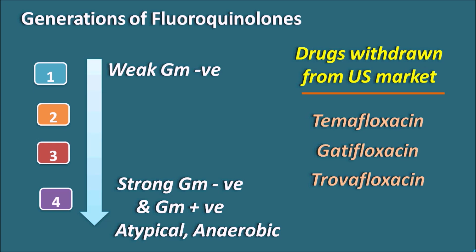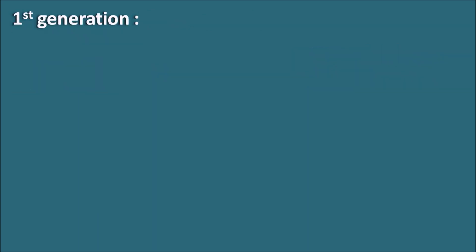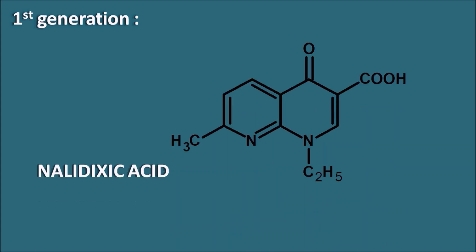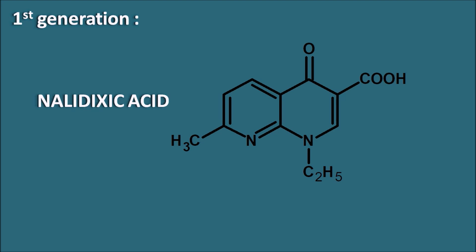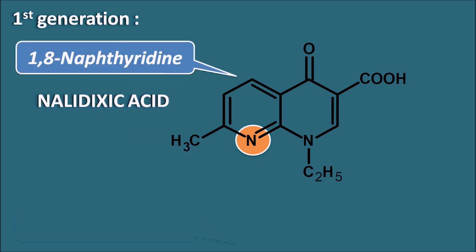Let us discuss one by one the drugs in different generations, starting with the first generation. One first generation fluoroquinolone is nalidixic acid. However, if we observe its structure, it has a nitrogen instead of carbon at one position, meaning it does not have a quinoline ring — instead it has a 1,8-naphthyridine ring system. So nalidixic acid is not technically a fluoroquinolone, but it is classified as first generation because it has structural similarity with fluoroquinolones and acts similarly.